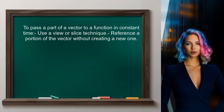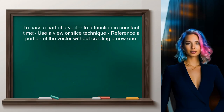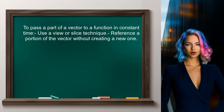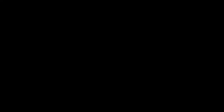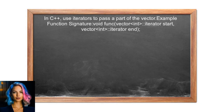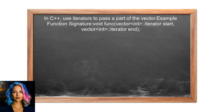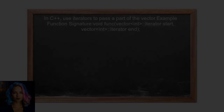To pass a part of a vector to a function in constant time, you can utilize a technique called a view or a slice. This allows you to reference a portion of the vector without creating a new one. In C++, you can achieve this by using the vector's iterators. You can create a function that accepts two iterators, which define the range of the vector you want to pass.